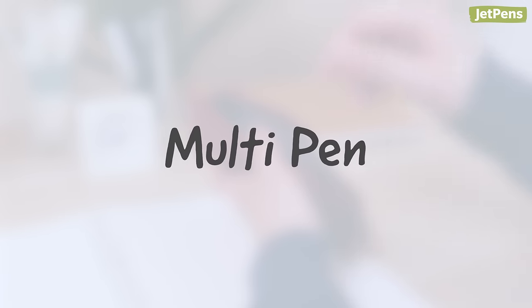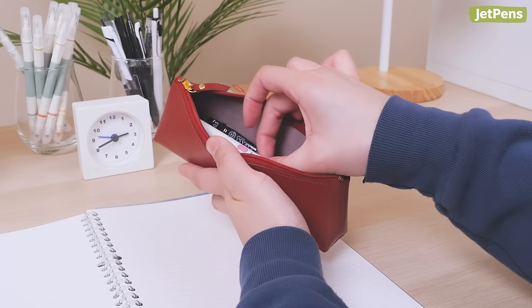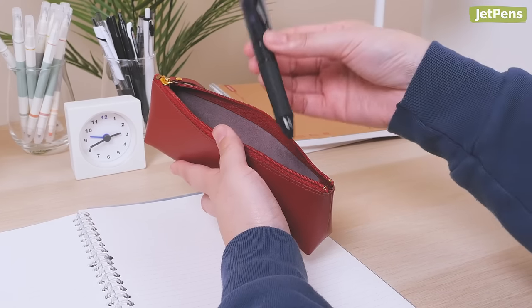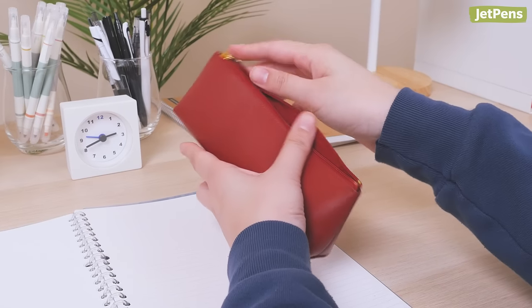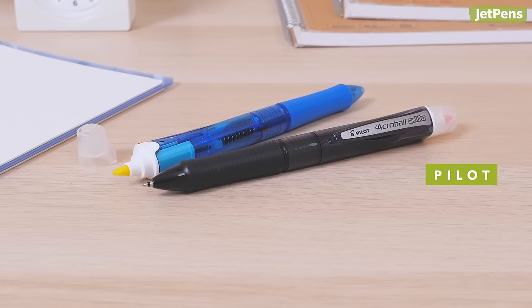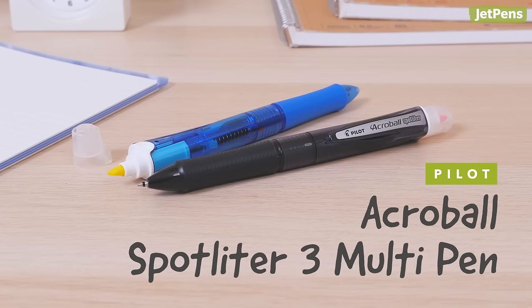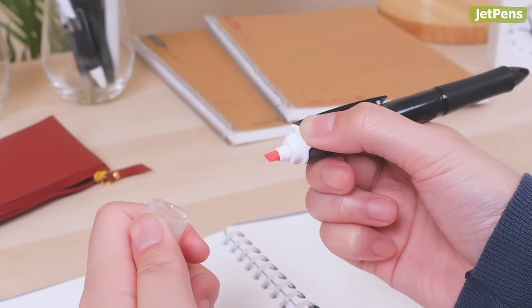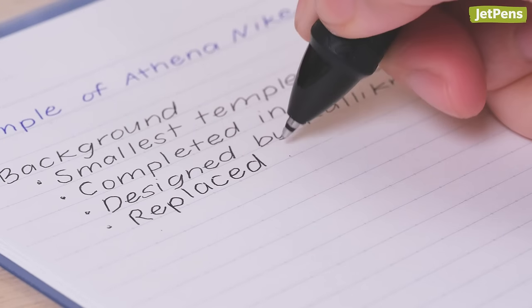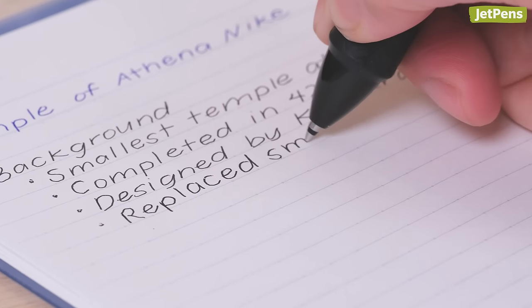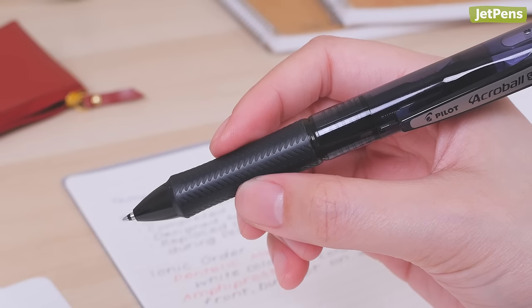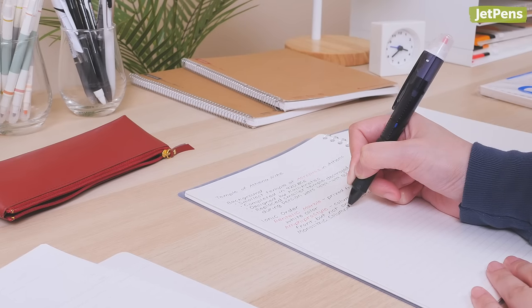Multi pens offer the convenience of multiple colors in one pen, freeing up space in your bag and reducing time spent switching colors. We love the Pilot Acroball Spotlighter 3 color. It's a multi pen and highlighter in one. It uses Pilot's Acroball ink, which creates vivid lines and writes without skipping. The rubber grip is comfortable during long note-taking sessions.